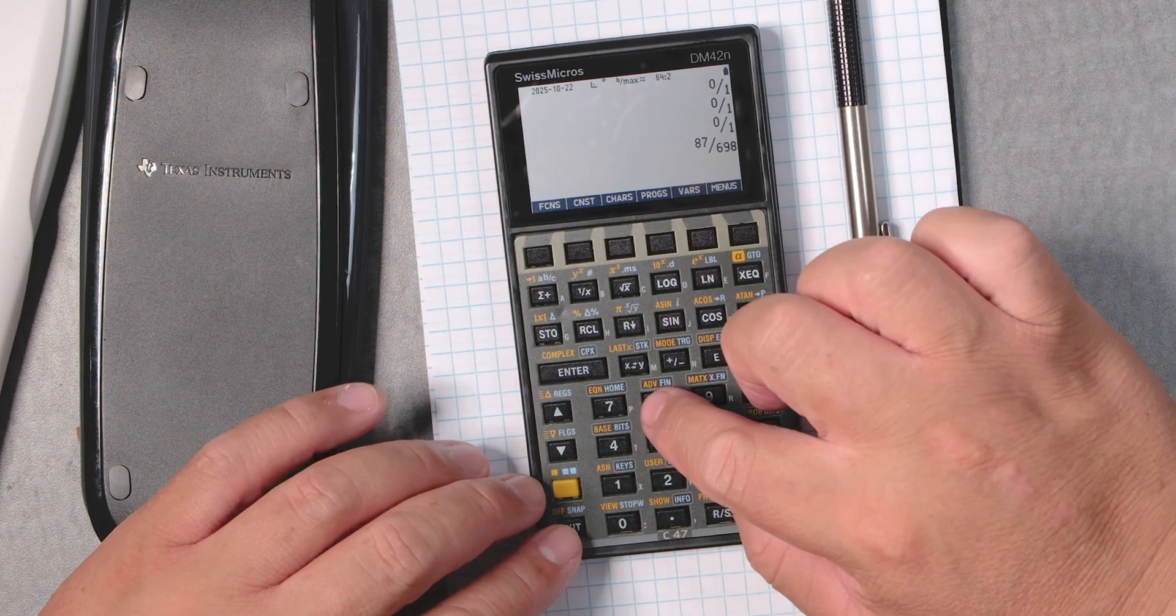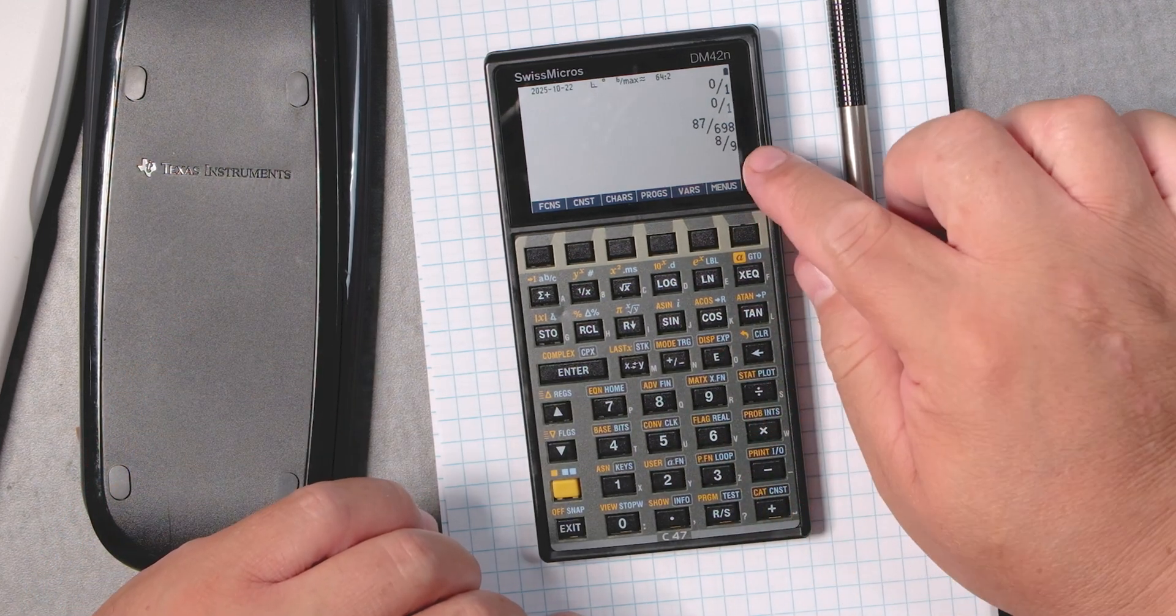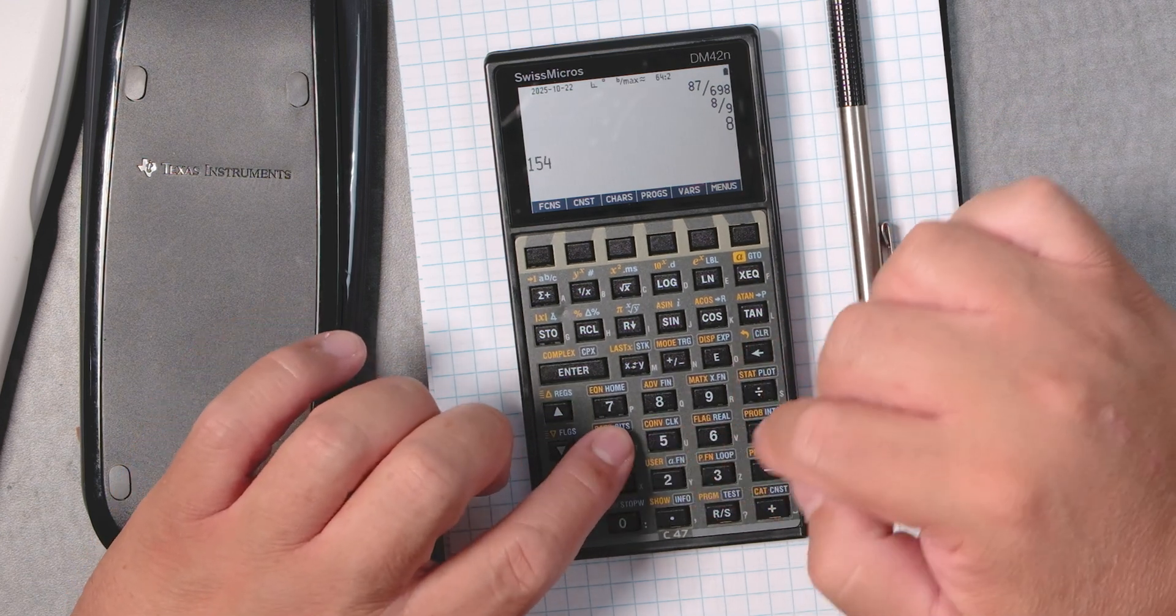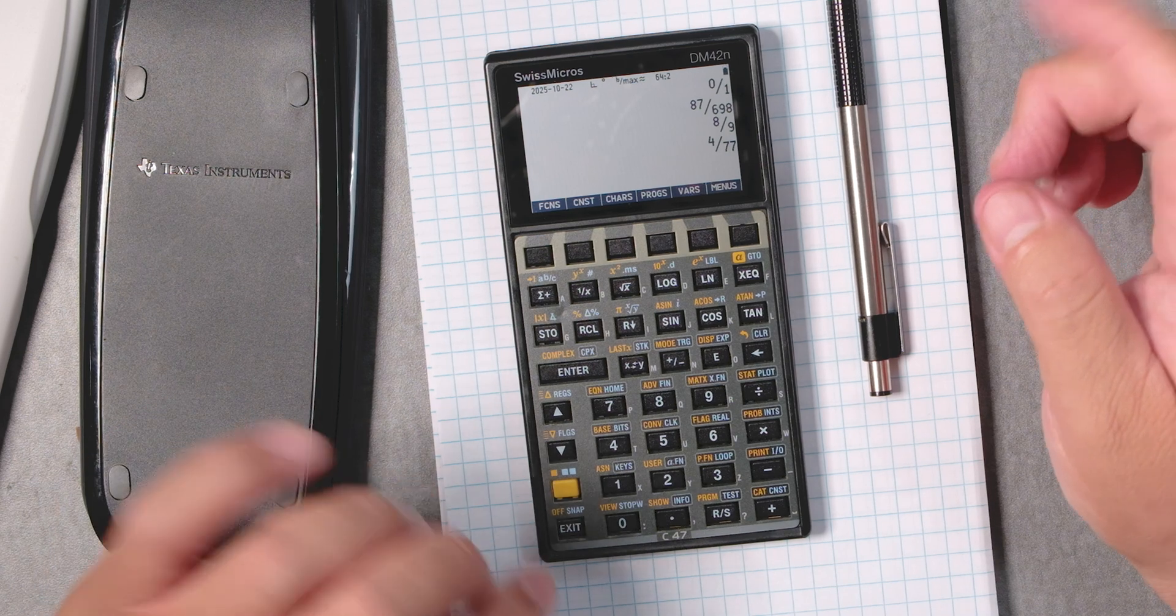A nice thing, too, is like if I type another fraction, it'll keep it there. Which is really nice. You see that? And it reduced on that one.